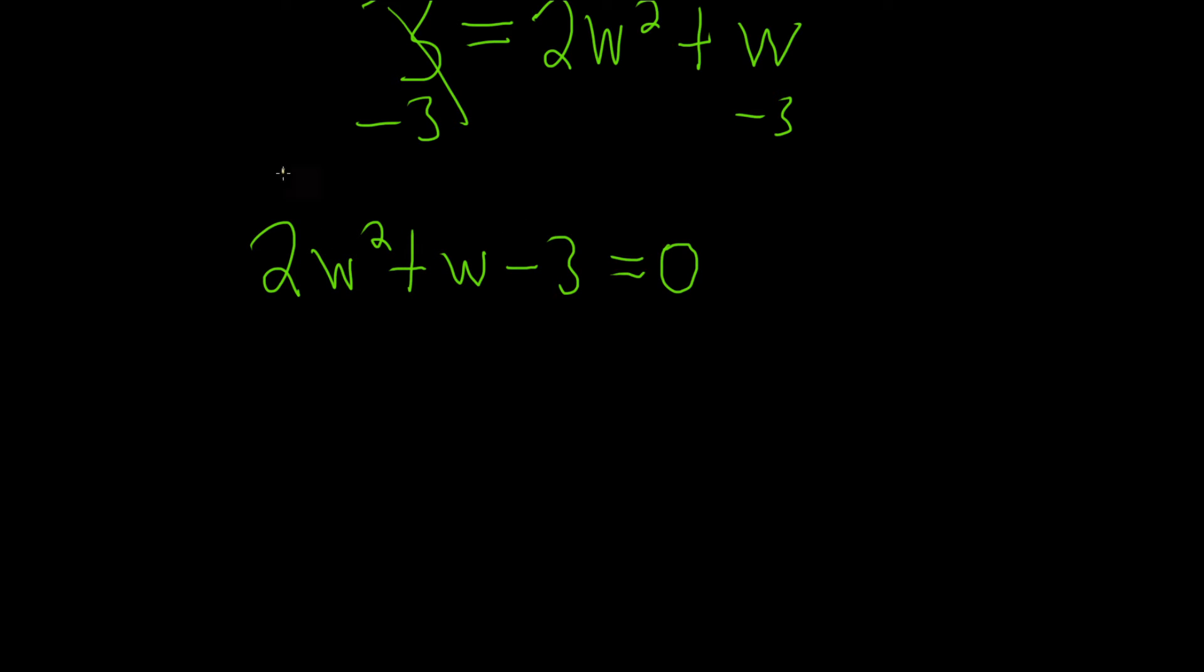So the AC method says you take this number here, which is your A, so 2, and you multiply it by this one, which is your C, so negative 3, and you see what you get. So you get negative 6. So this means that we need 2 numbers that multiply to negative 6 and that add to whatever number is in the middle here. So there's a 1 here, so they need to add to 1. So again, recap. To use the AC method, you multiply this number here and this number here and you get the answer. Then you say, okay, you need 2 numbers that multiply to negative 6 and add to 1.